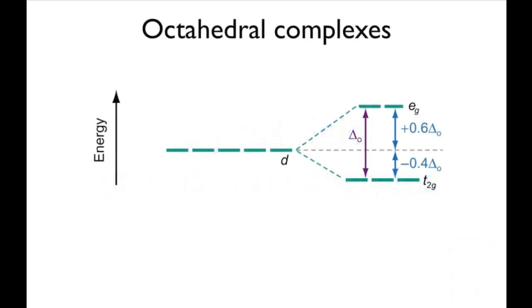In an octahedral complex, the five 3D orbitals are split, with three of them, the T2G set, stabilized, and two, the EG set, destabilized.